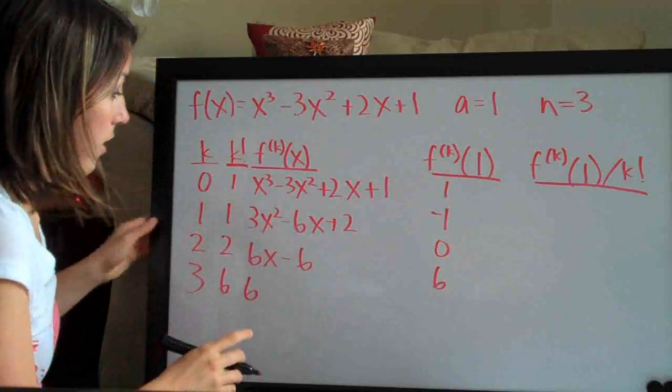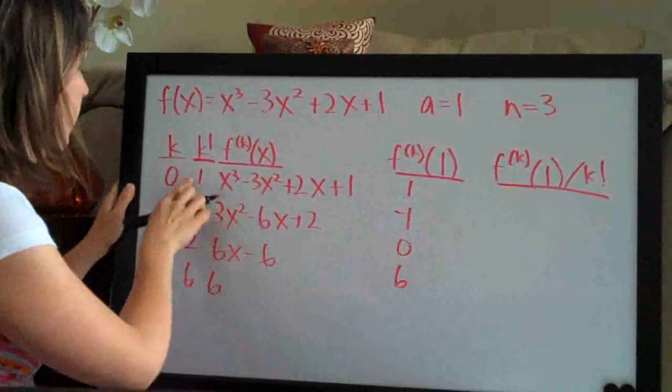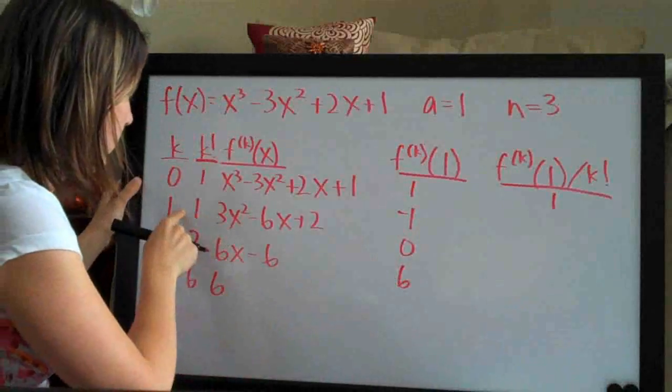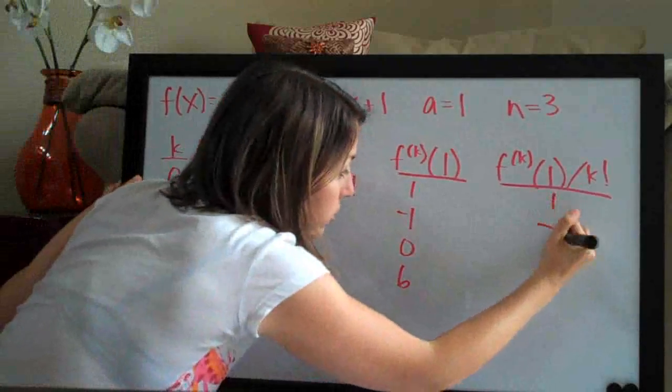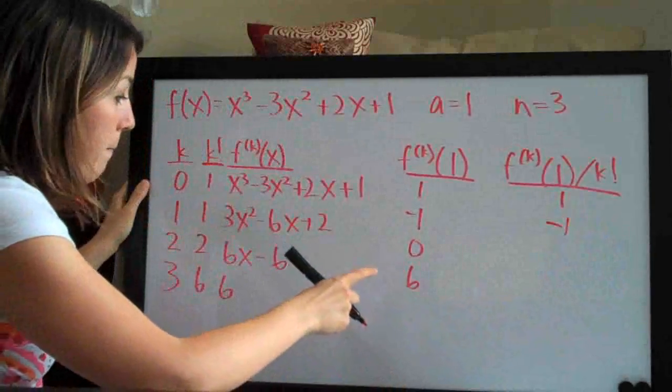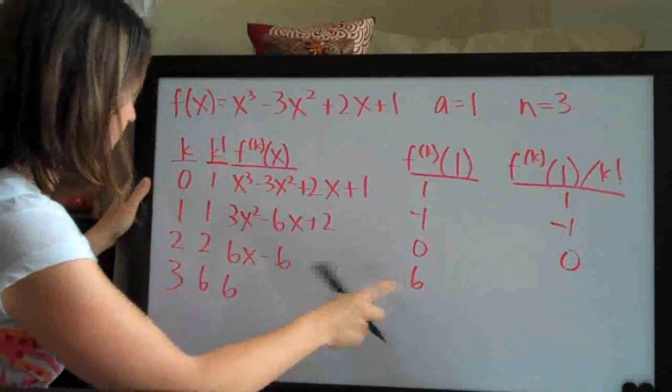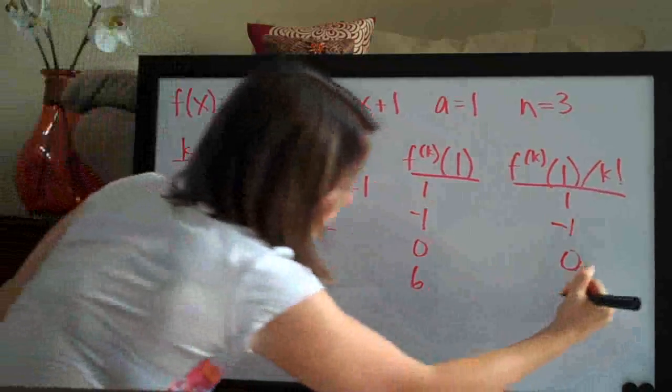So here's our factorial column. So now we just do 1 divided by 1, which is 1. Negative 1 divided by 1, which is negative 1. 0 divided by 2, which is 0. And 6 divided by 6, which is 1.